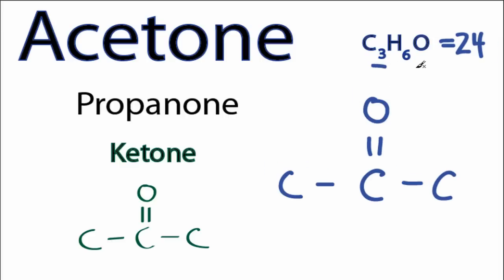So we've used the 3 carbons and the oxygen, and we have 6 hydrogens that we need to put around the structure. So let's put them around the carbons. So we have hydrogen, hydrogen...